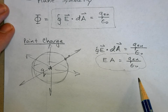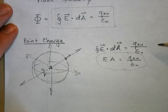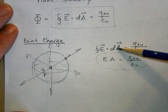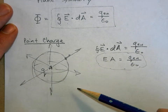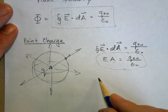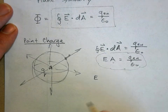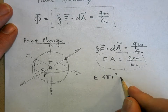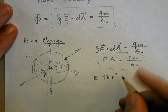So this becomes e times A equals q enclosed over epsilon naught. Writing Gauss's law this way is the standard approach — you show you know what Gauss's law is, but the left side will always turn into e times A if you choose the right surface area to surround the charge with.